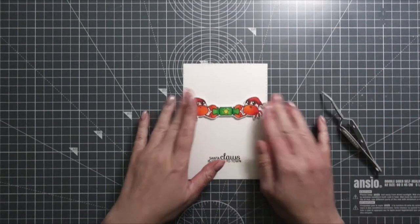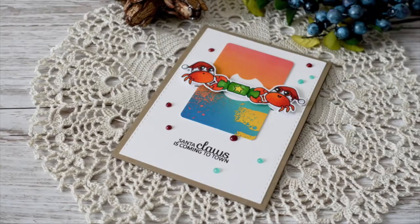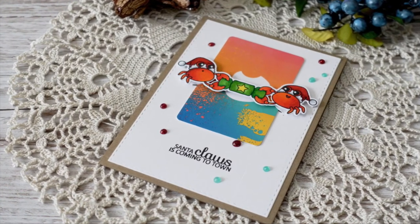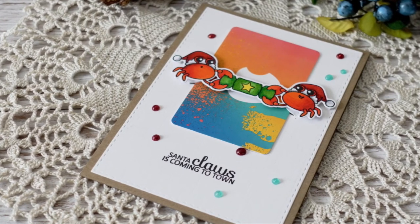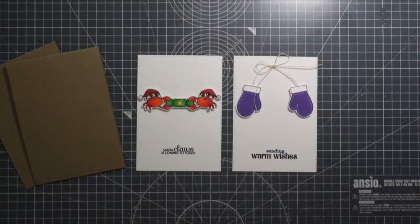I did the same thing: added foam squares where the slits for the gift card are and adhered the two crabs on top of it. If you want to see the coloring of the crabs, check out my previous video. I'll leave it in the description below, and you can find links at the end of this video.